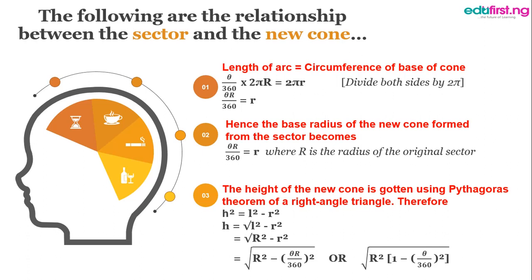Here are the mathematical relationships between the sector and the cone. In other words, when you form your cone, the length of the arc of the sector is equal to the circumference of the circular base of the cone.